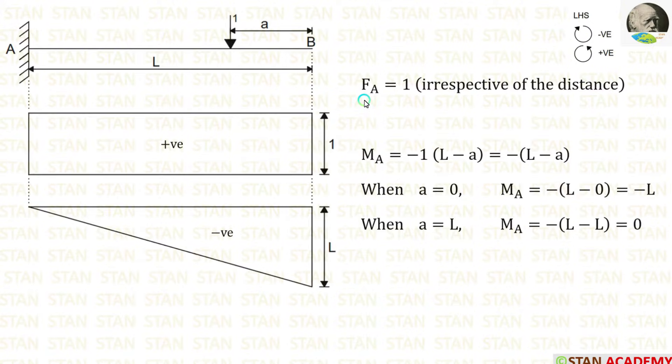Now let us calculate the shear force at point A. The shear force at point A will be equal to 1. It will be constant and will not change with respect to distance. You can see that for the whole length of the beam it is constant and is equal to 1.